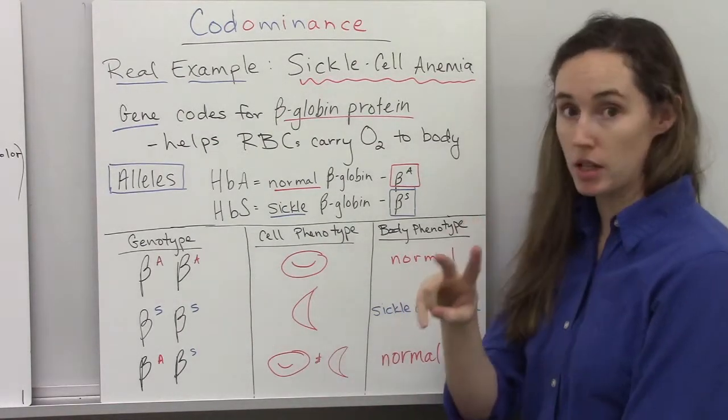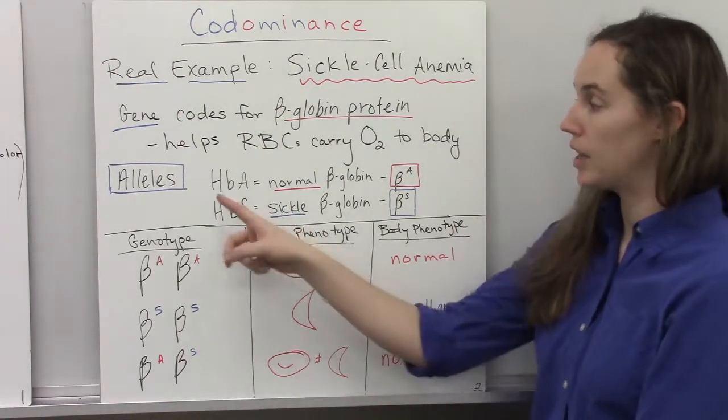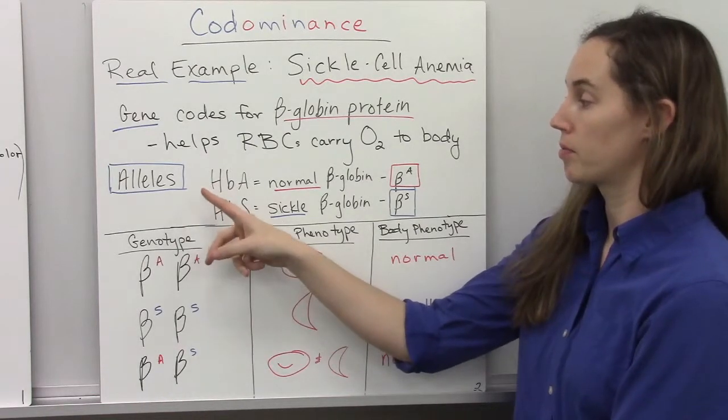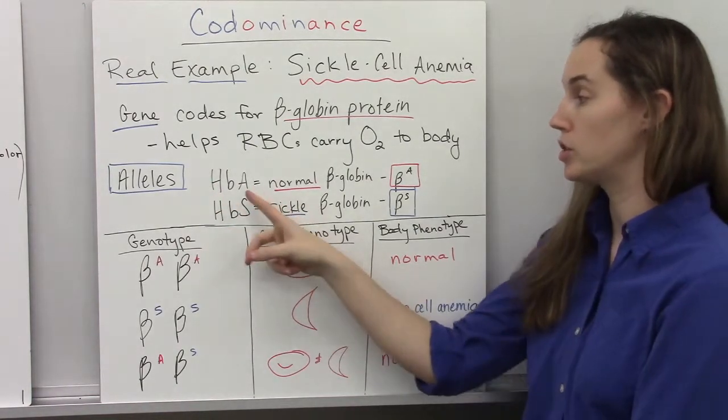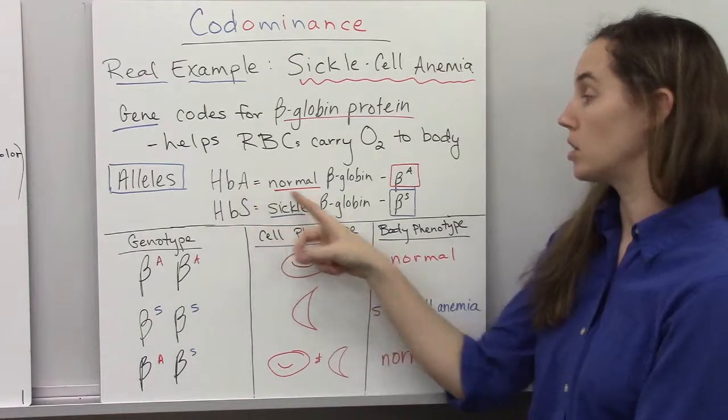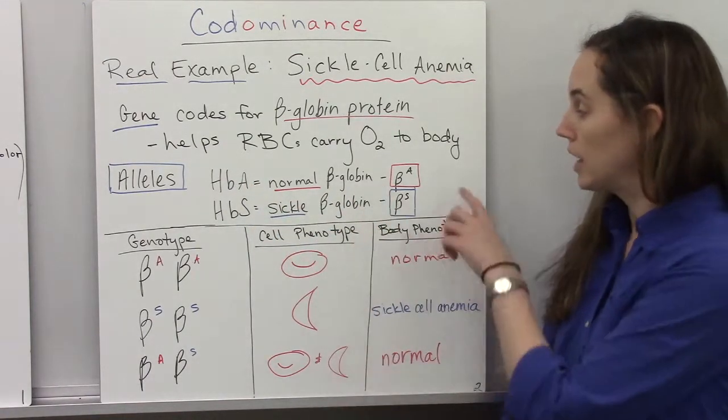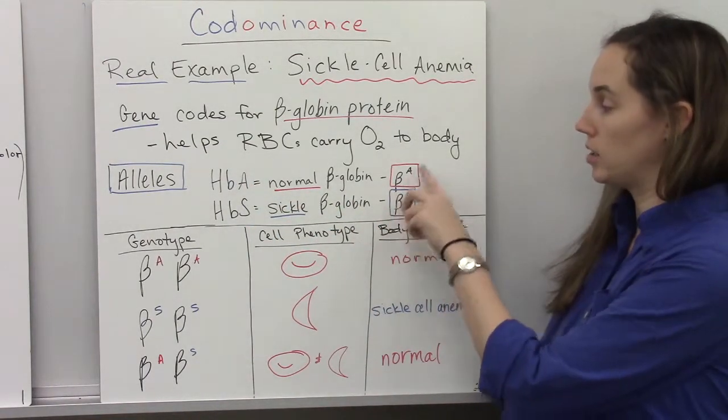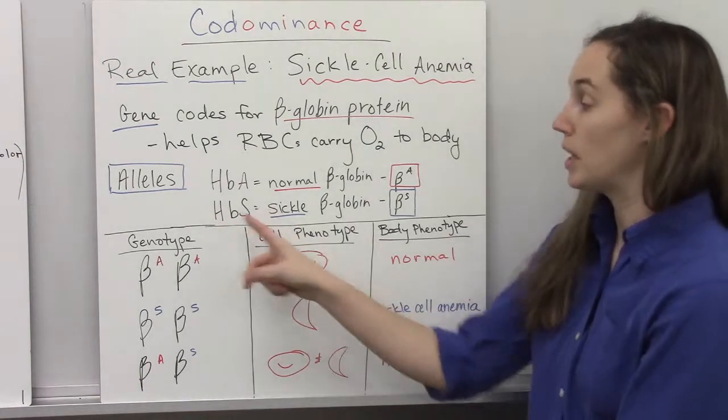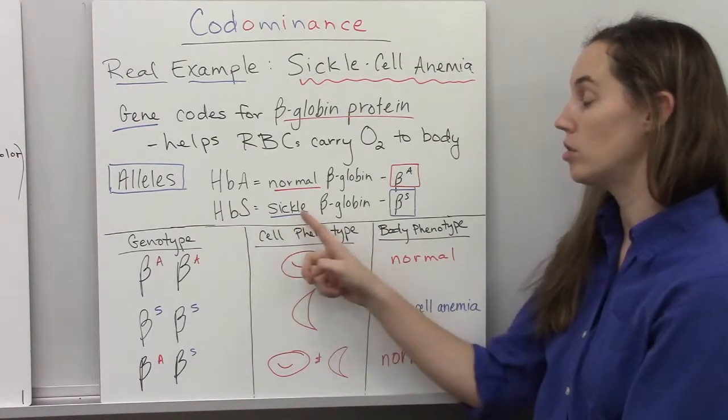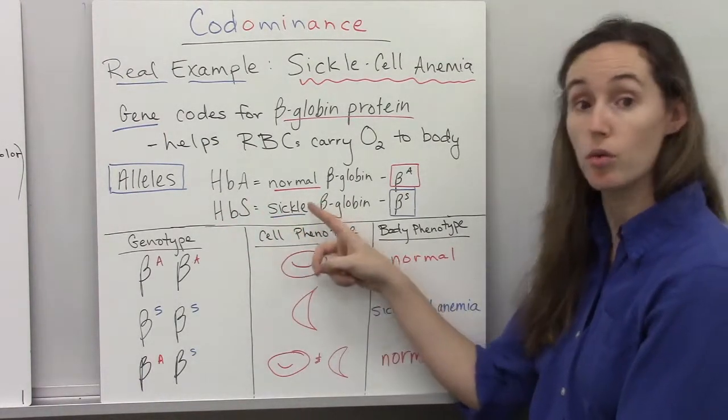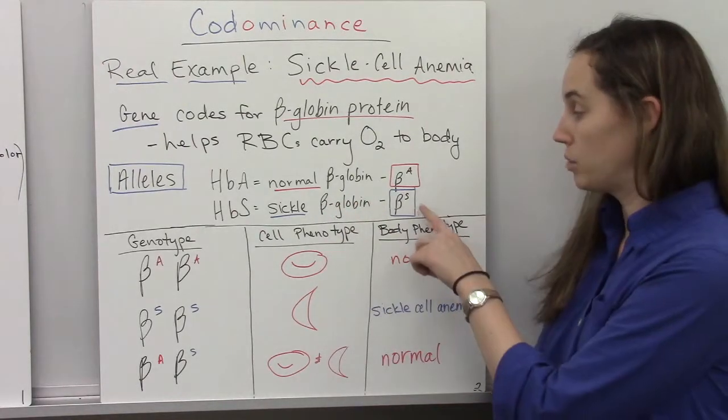There are two alleles for this beta-globin gene. There is HbA, which when it's functioning, it makes the normal beta-globin protein. This is its notation, a beta with an A. And then HbS, which is the sickle allele, the allele for the sickle form of the beta-globin.